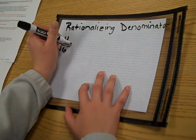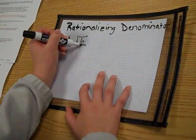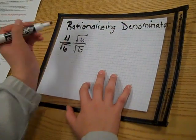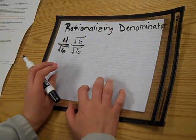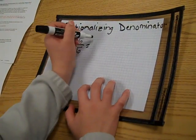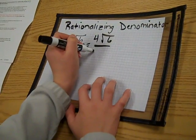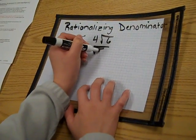Then you have to multiply by the square root of 6 over square root of 6 to both sides to get a rational denominator, and that equals 4 times the square root of 6 over the square root of 36.